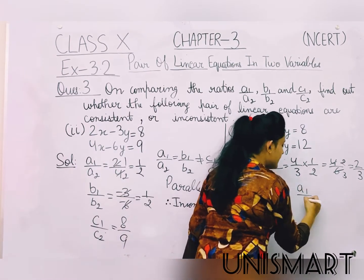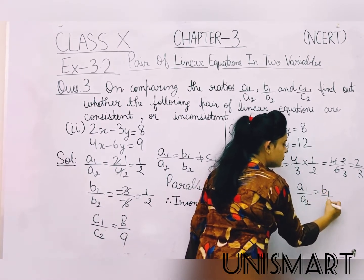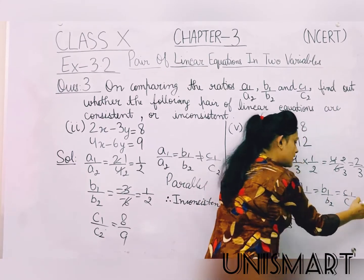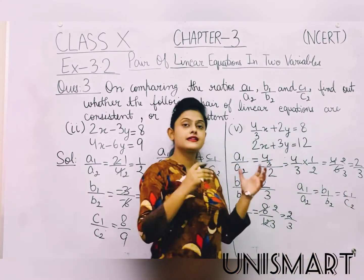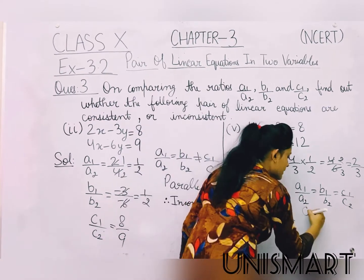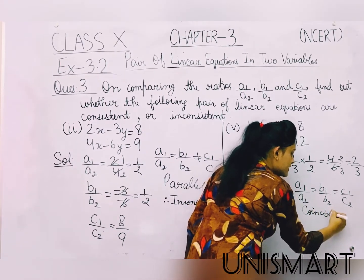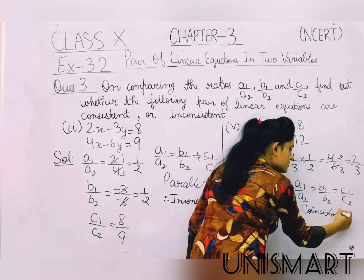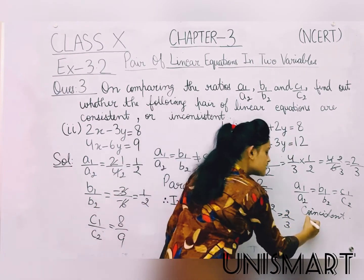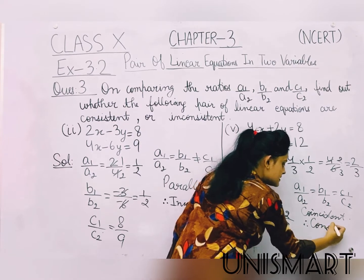So a1 upon a2 equal to b1 upon b2 equal to c1 upon c2. Our three ratios are equal, so we have to understand that this is our coincident. Coincident means this is our consistent. So we write here: consistent.